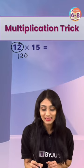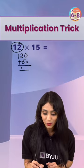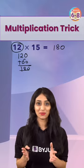Aba ap iska half kar denge. That means it's 60 or simply ap isko add karo ge, you get 180. That was pretty simple, right?